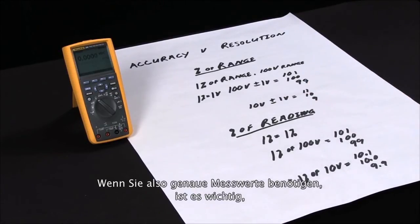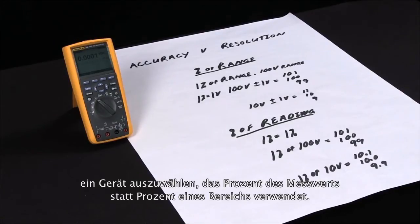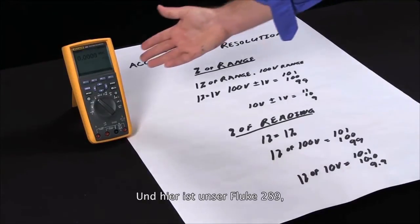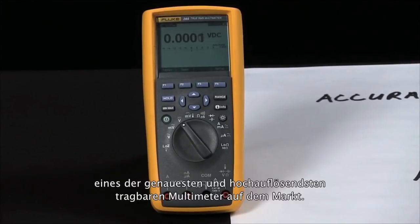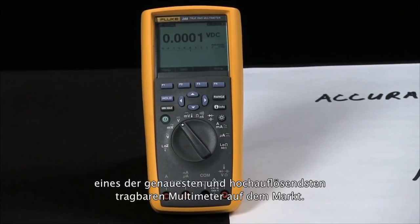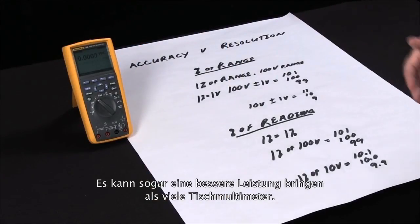So it's very important if you're looking for accurate readings to make sure you select a device with percent of reading versus percent of range. Here we have our Fluke 289, which is actually one of the most accurate and highest resolution handheld multimeters you can get. It can actually outperform a lot of bench multimeters.